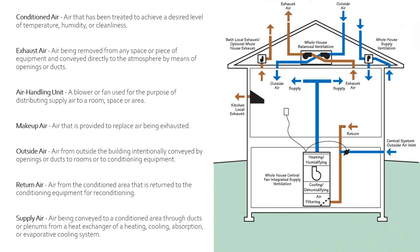We're going to start with conditioned air. That is air that has been treated to achieve a desired level of temperature, humidity, and cleanliness. That is basically any heated or cooled air that you would get out of a diffuser. In this diagram, the conditioned air is going to be anything coming from your air handler unit or your heater.